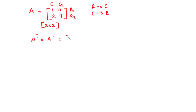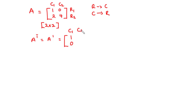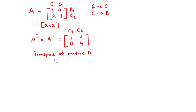A transpose is equal to: elements in row 1 become elements in column 1, so we have 1, 0 as column 1. Then elements in row 2 become elements in column 2. This is the transpose of matrix A, and it is also a 2x2 matrix.